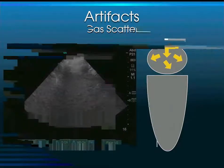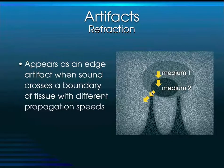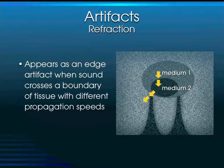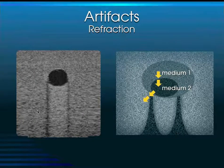Refraction is another type of artifact. When sound travels through two different mediums it gets redirected or refracted, resulting in a shadow down the edges of the second medium. This is not unlike the bending of a pencil in a glass of water as described by Snell's Law. The sound changes speed between medium one and medium two, gets redirected, and we get lateral shadows coming down the edges of the different medium.